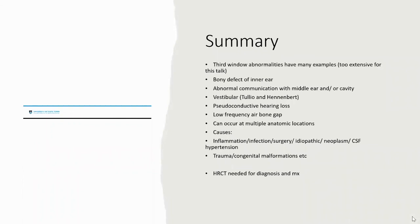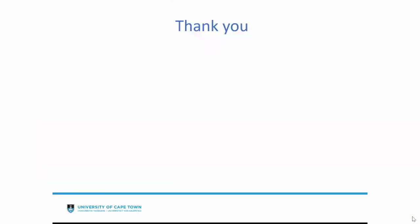In summary, third window abnormalities have many examples. It is a bony defect of the inner ear demonstrating abnormal communication with the middle ear or cranial cavity. They present with vestibular signs and a pseudo-conductive hearing loss with a low-frequency air-bone gap, and can occur in many anatomical locations with varied causes. A high-resolution CT scan is essential to make the diagnosis and guide management.